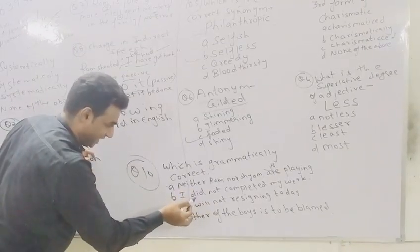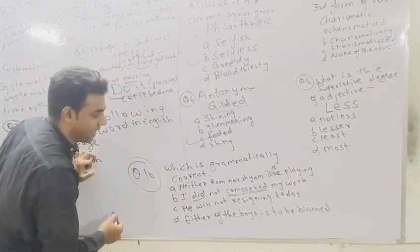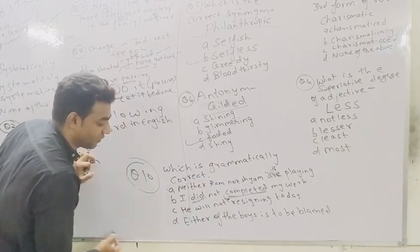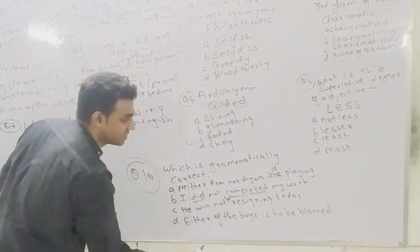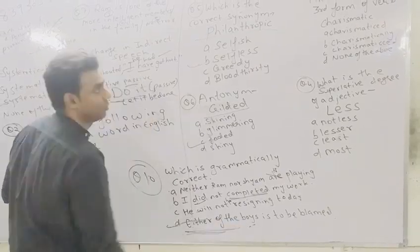I did not... After 'did not' comes the first form of the verb. Will plus not plus be, then comes the ing form. D: Either of the boys is to be blamed is correct because of singular agreement - don't be confused by the plural.